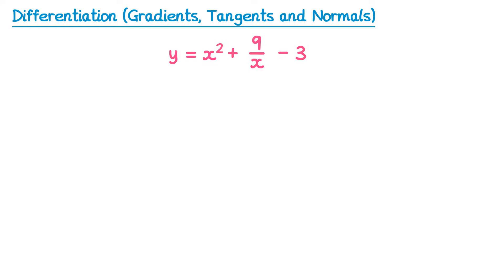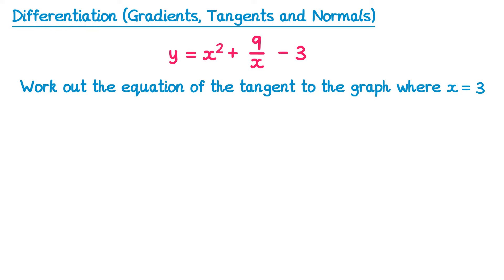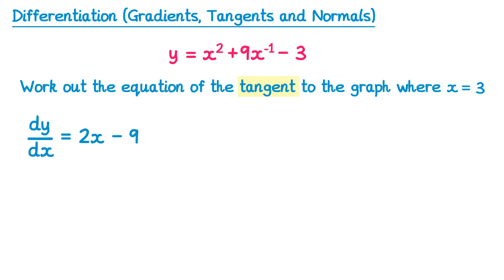Now let's take a different graph and work out the equation of the tangent where x equals 3. We start by finding dy by dx. x squared differentiates to give 2x. It's easier to write 9 over x as 9x to the negative 1, which differentiates to give negative 9x to the negative 2, or negative 9 over x squared. Differentiating negative 3 gives 0.